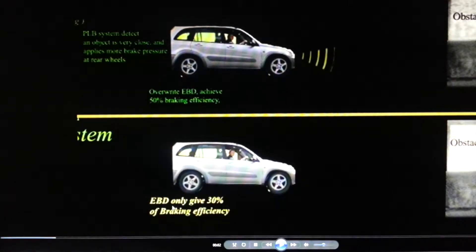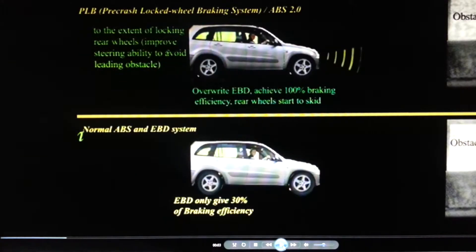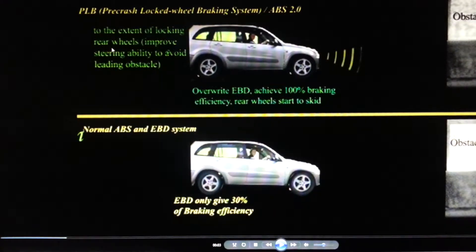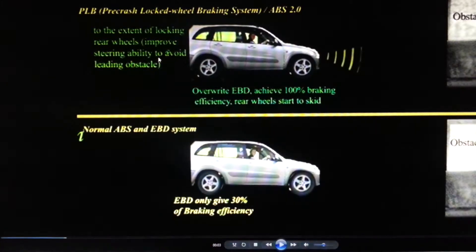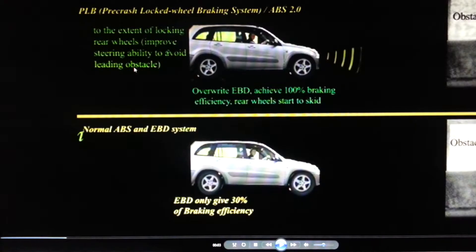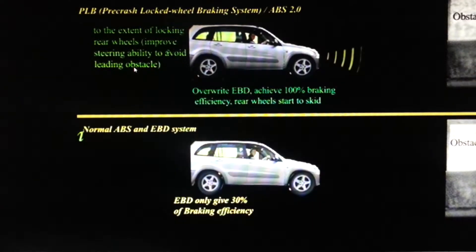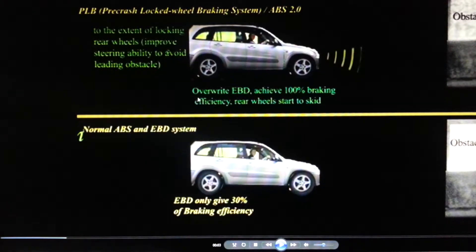The normal EBD system — Electronic Braking Distribution — will still give about 30% of braking efficiency to the rear wheels. When PLB increases pressure on the rear wheels to the extent of locking them, it can improve the steering ability of our vehicle to avoid the leading obstacles. How locking of the rear wheels improves steering ability has been explained in another video clip.